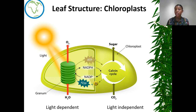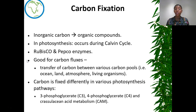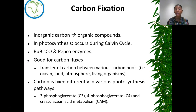A plant then increases its biomass through the formation of these new organic molecules. Carbon fixation is simply the conversion of inorganic carbon to organic compounds, and this happens during the Calvin cycle. Depending on whether it's a C3, C4, or CAM plant, it will be either the Rubisco or the PEPco enzymes responsible for this conversion. Carbon fixation facilitates the transfer of carbon between the various carbon pools in the environment — be it the ocean, land, atmosphere, or living organisms. Carbon is fixed differently in various photosynthesis pathways.